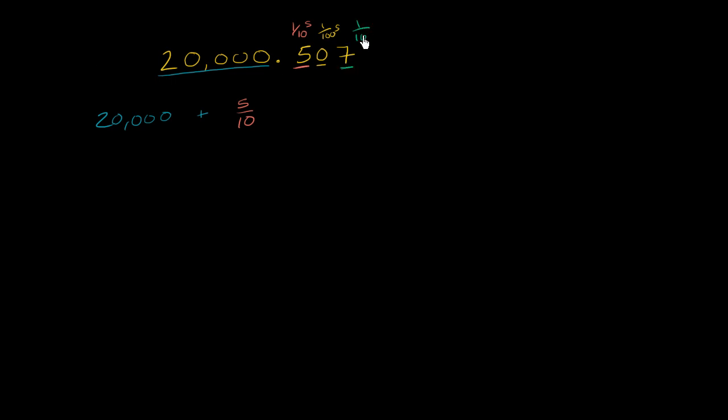That's the thousandths place. So we could write that plus 7 thousandths. So if we were to write down everything that I just spoke out loud, we would say that this is 20,000, let me write that a little bit neater, this is 20,000,